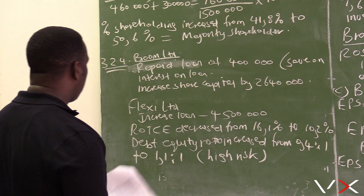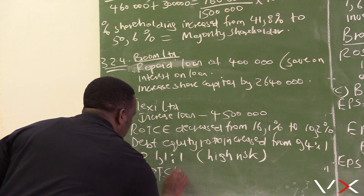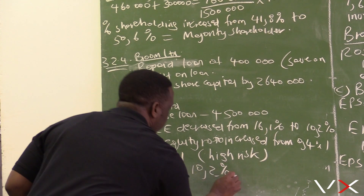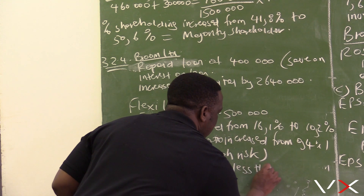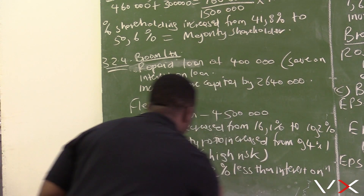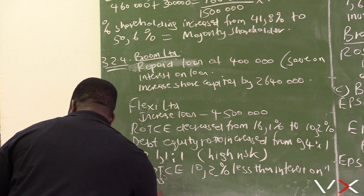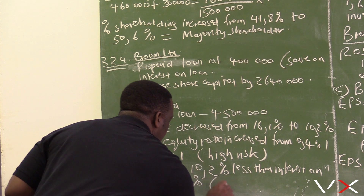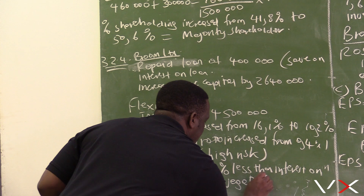The return of 10.2 percent is less than the interest rate on loans, which is 13 percent. Therefore, there is negative gearing.